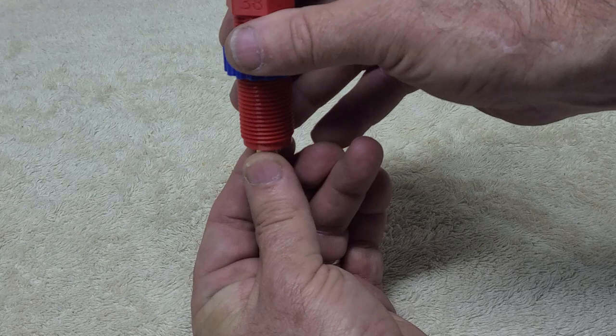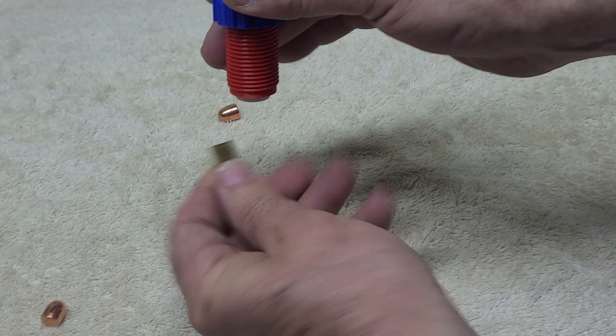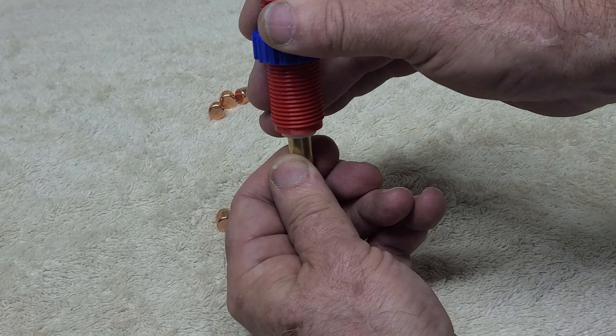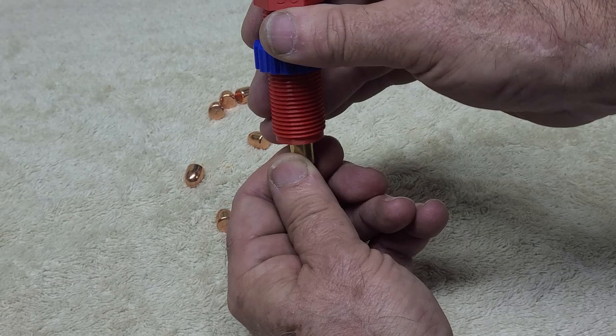So you have to have a turret press or a progressive press to take advantage of this. You can't use a single stage rock chucker with these—it doesn't make any sense.